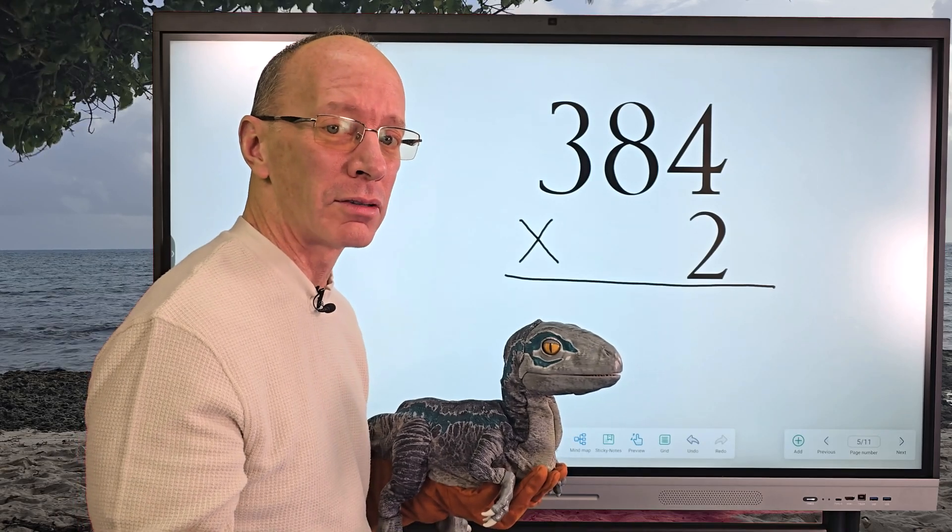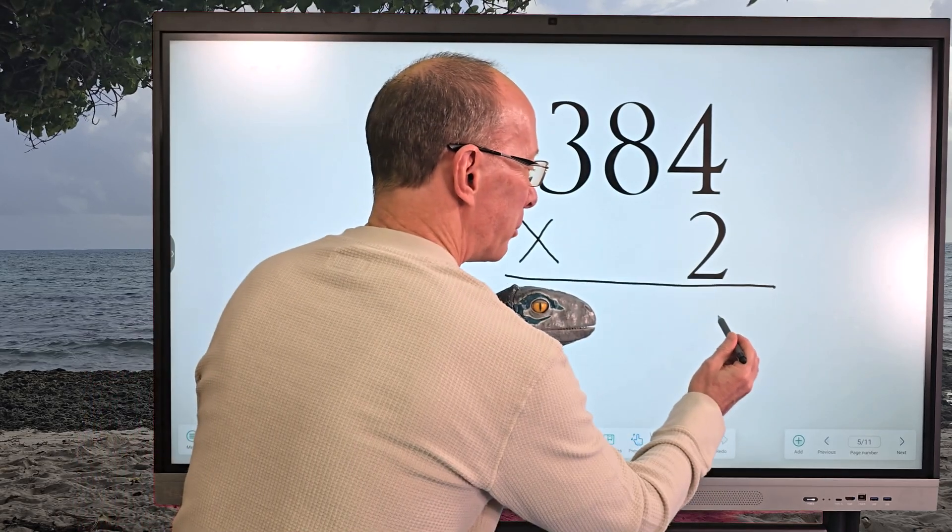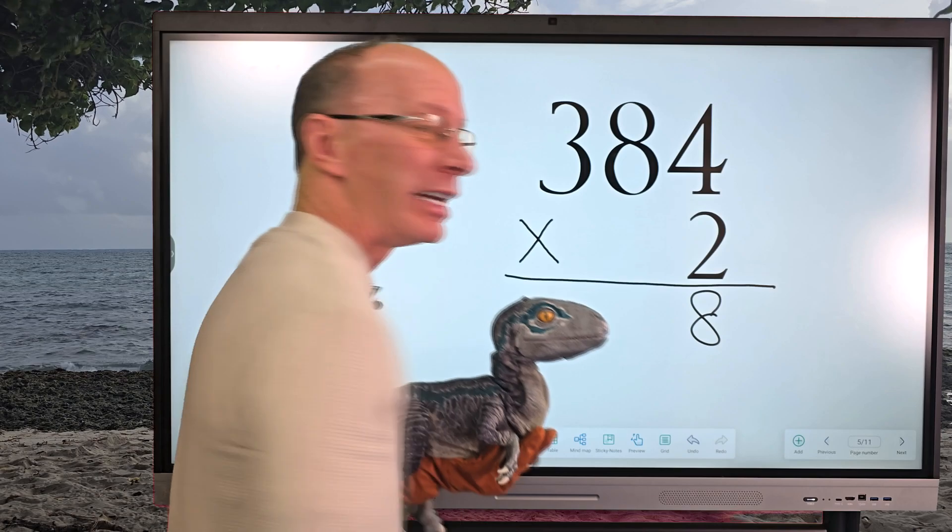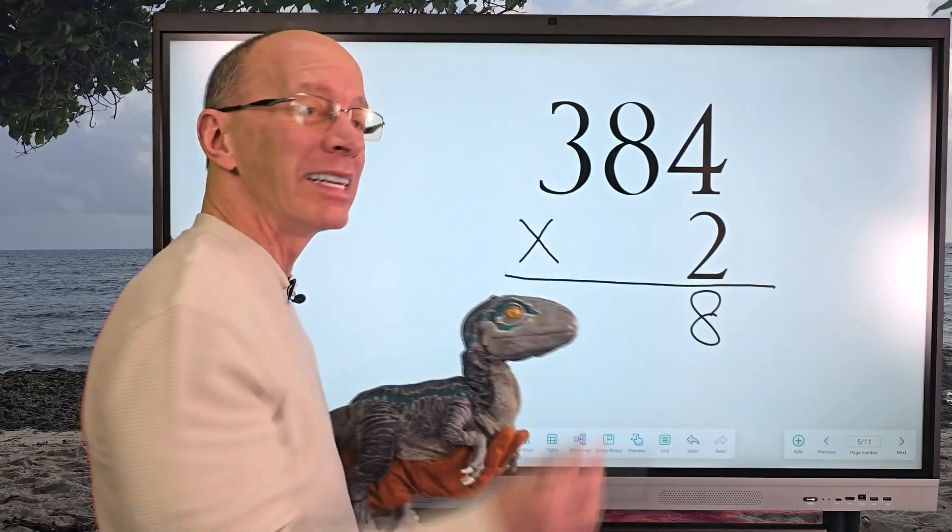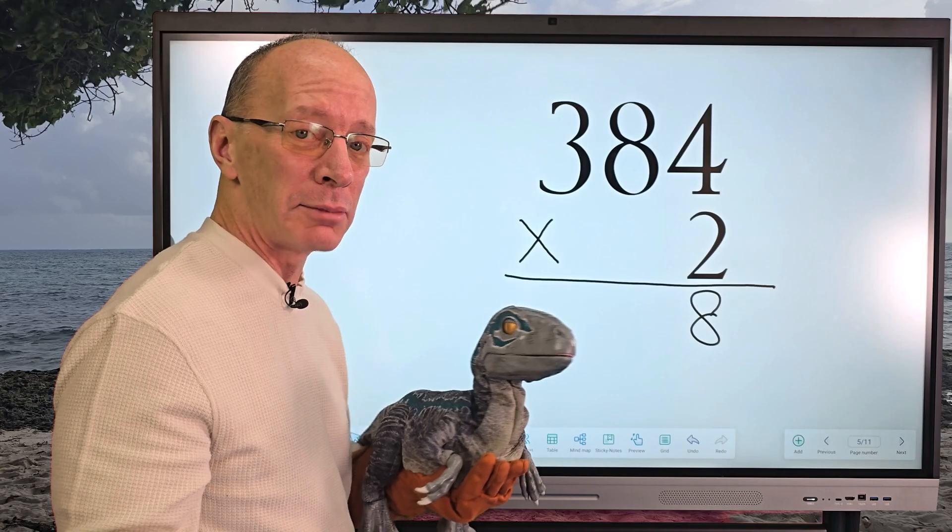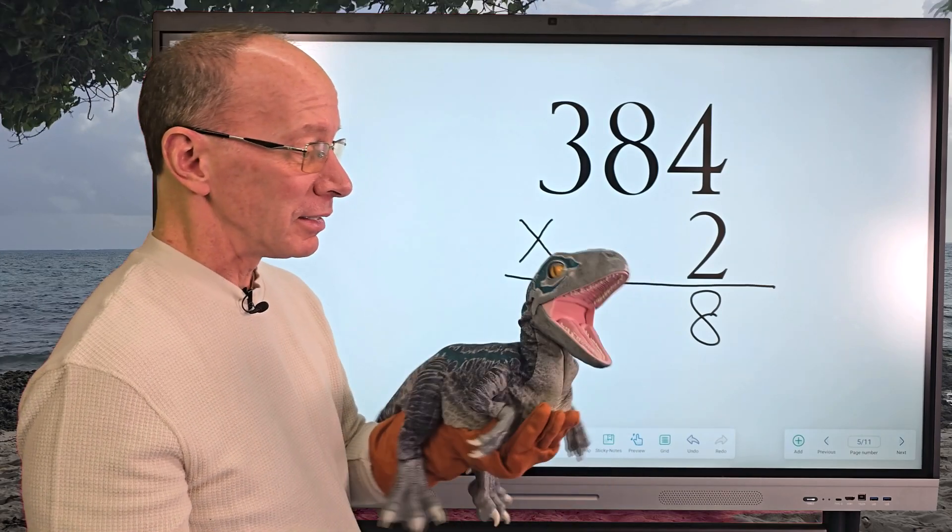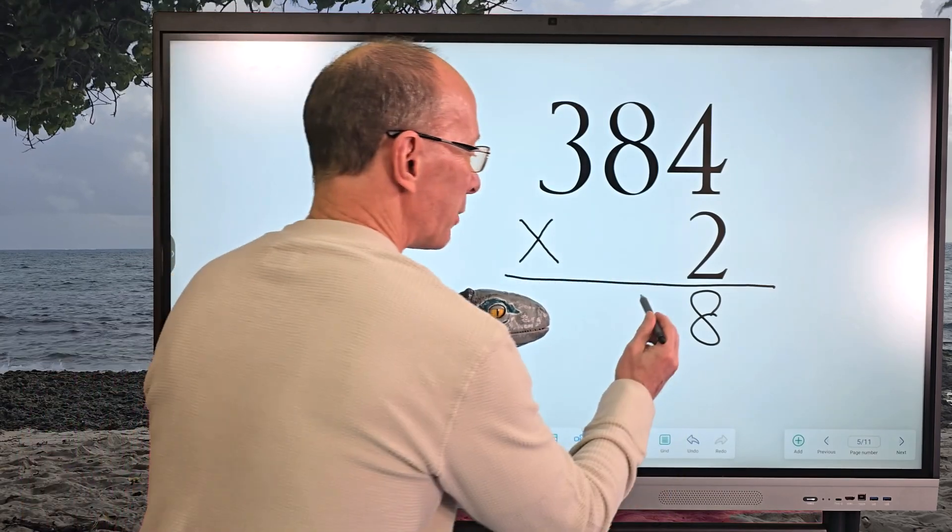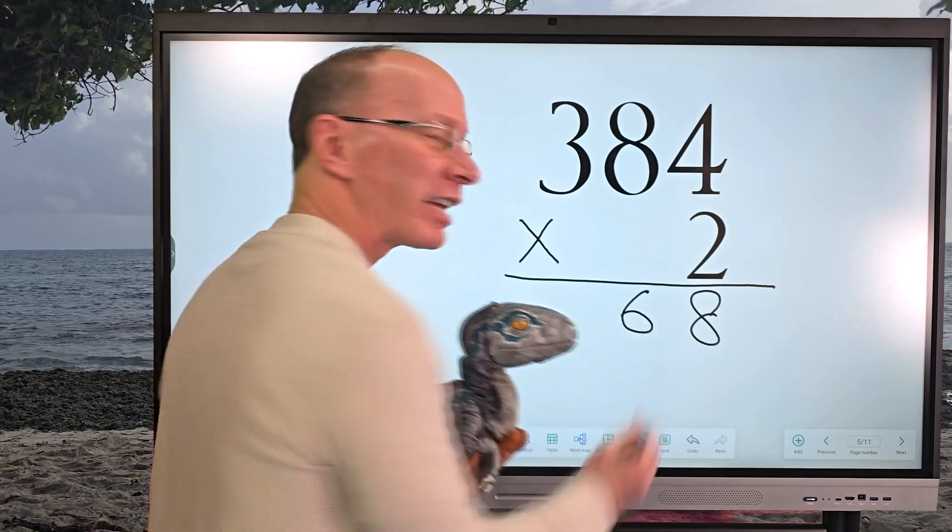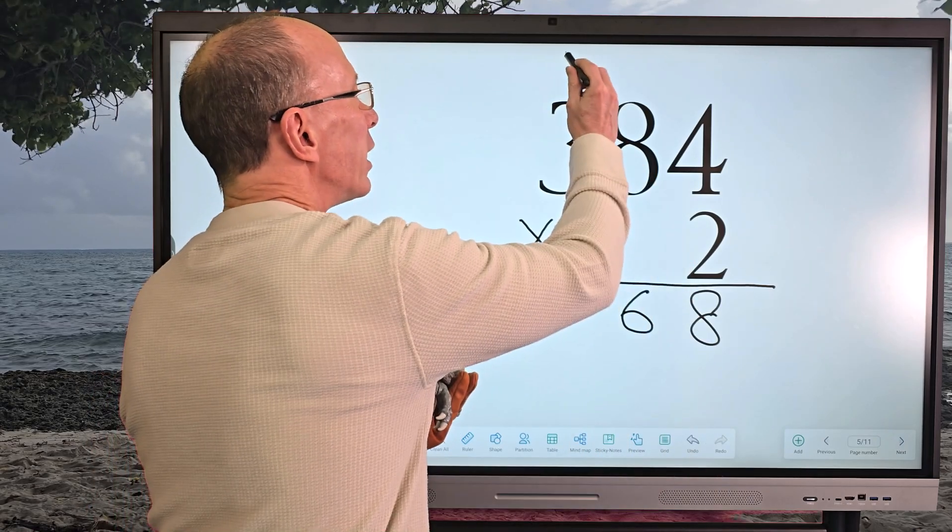Two times four equals eight, so I'm going to put the eight right here. And now I'm ready to multiply the next number. Two times eight—do you know what that is? Sixteen. So I'm going to put the six right here, and I have to carry the one all the way up here. I'm going to add that one in a little bit—not yet, but in a little bit.